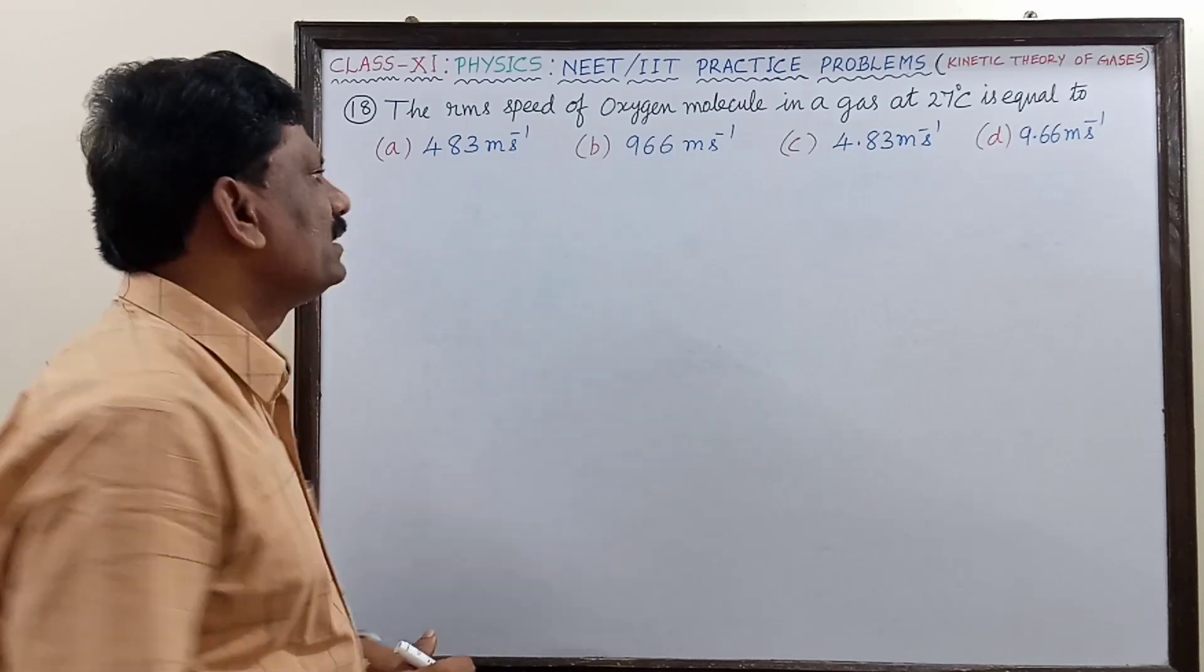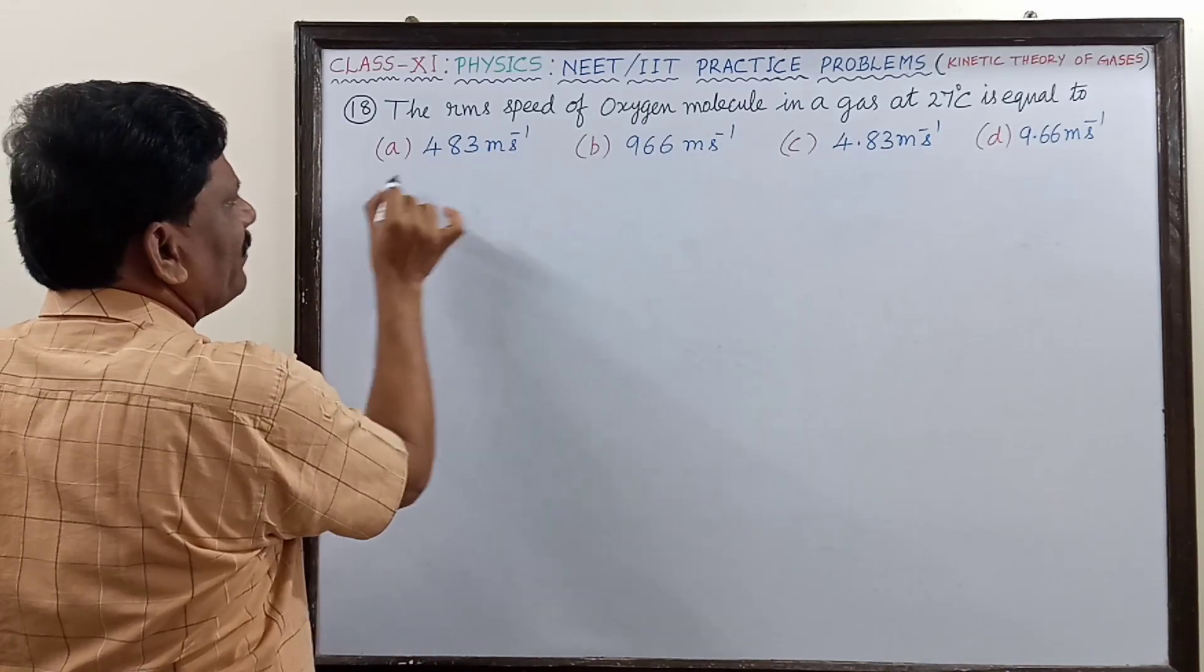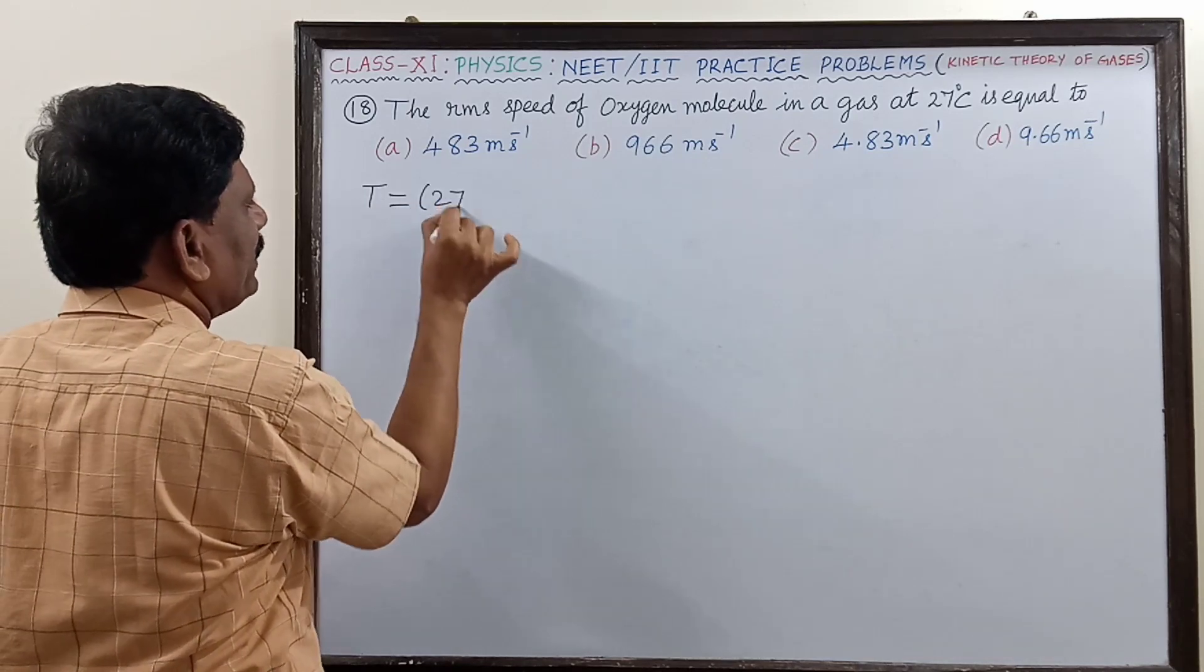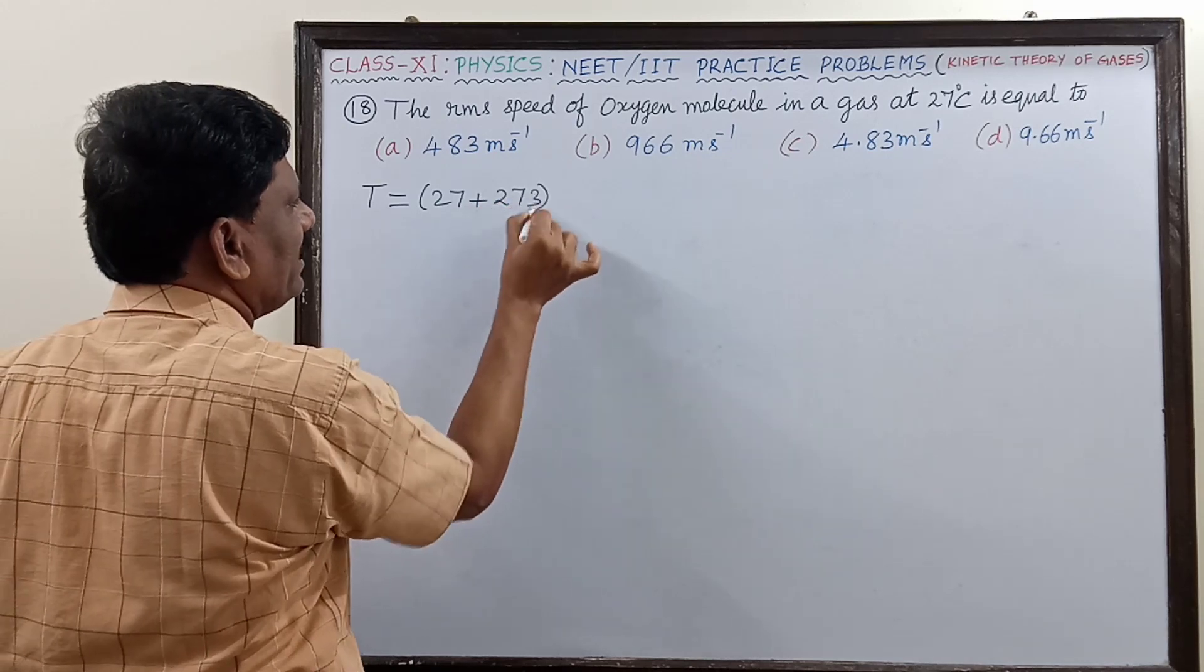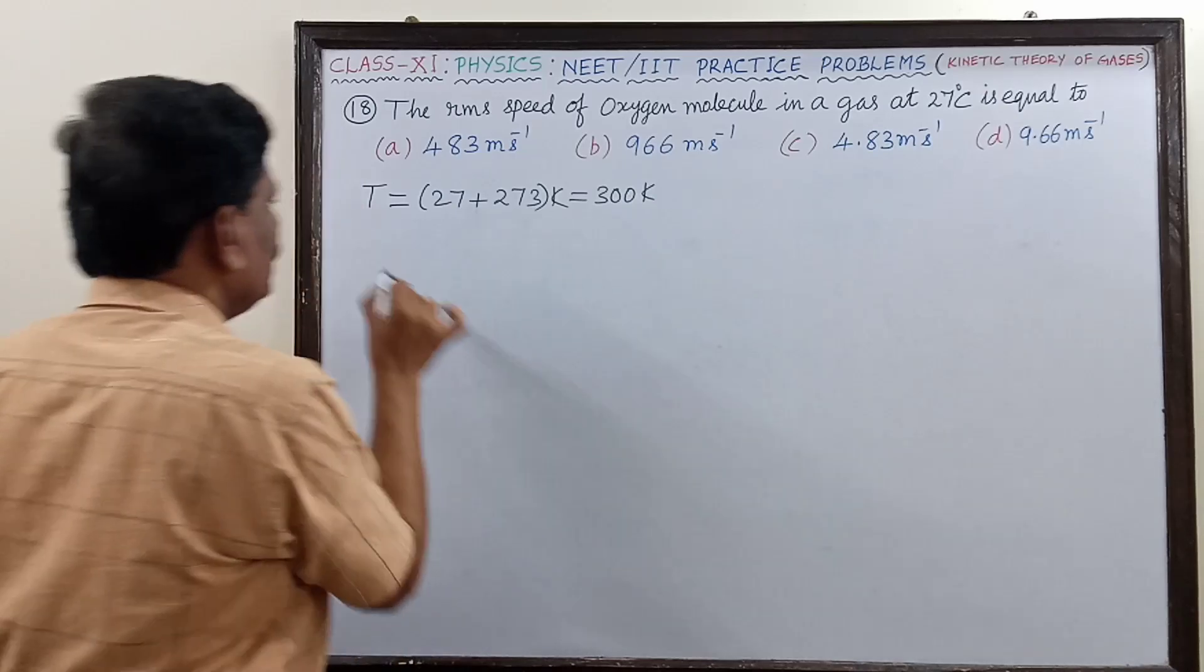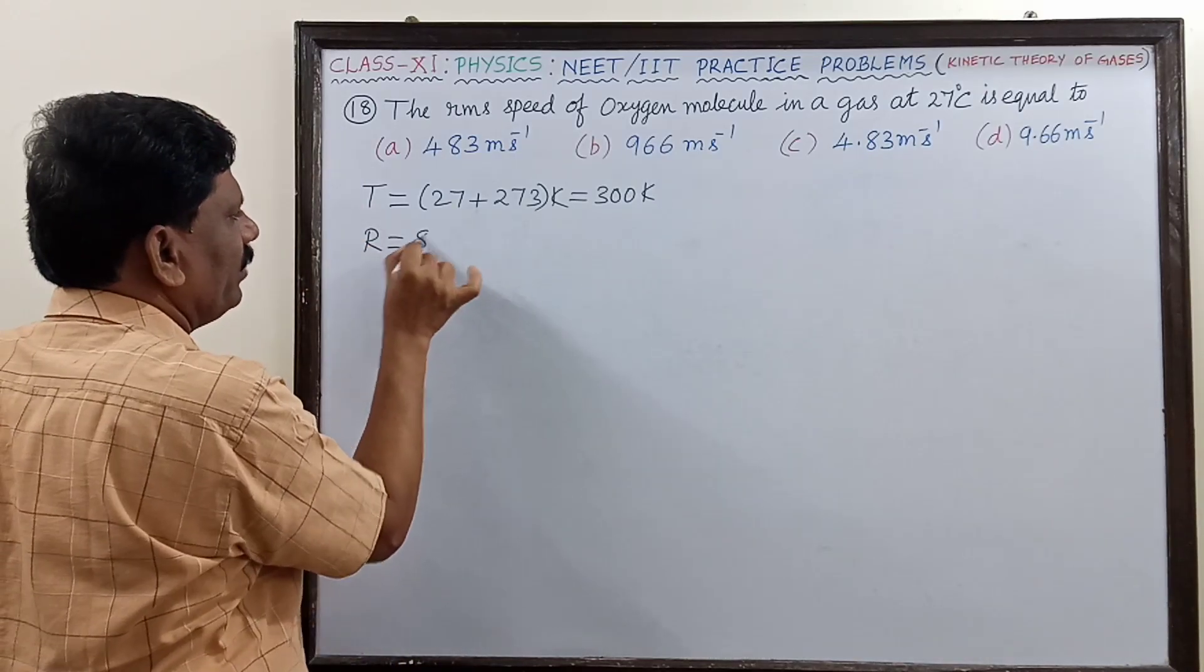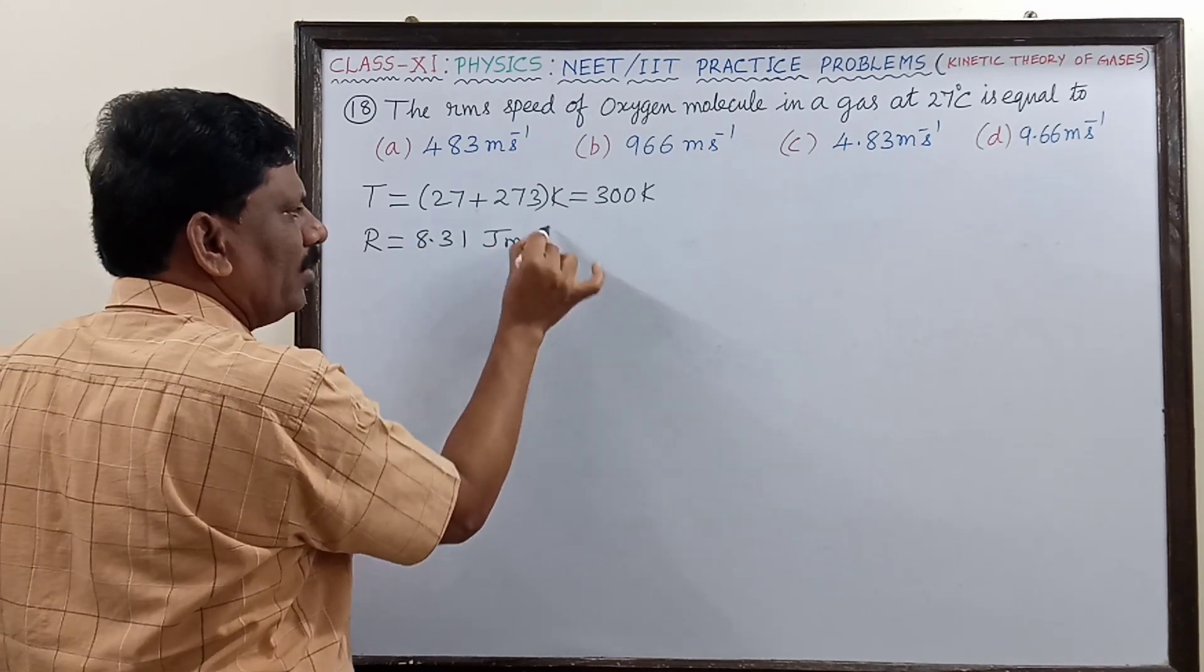First, what information is given? The temperature T is equal to 27 degrees Celsius. In absolute scale, it is 27 plus 273, so this equals 300 K. Gas constant will not be given sometimes, so you have to remember it is 8.31 Joule per mole per Kelvin.